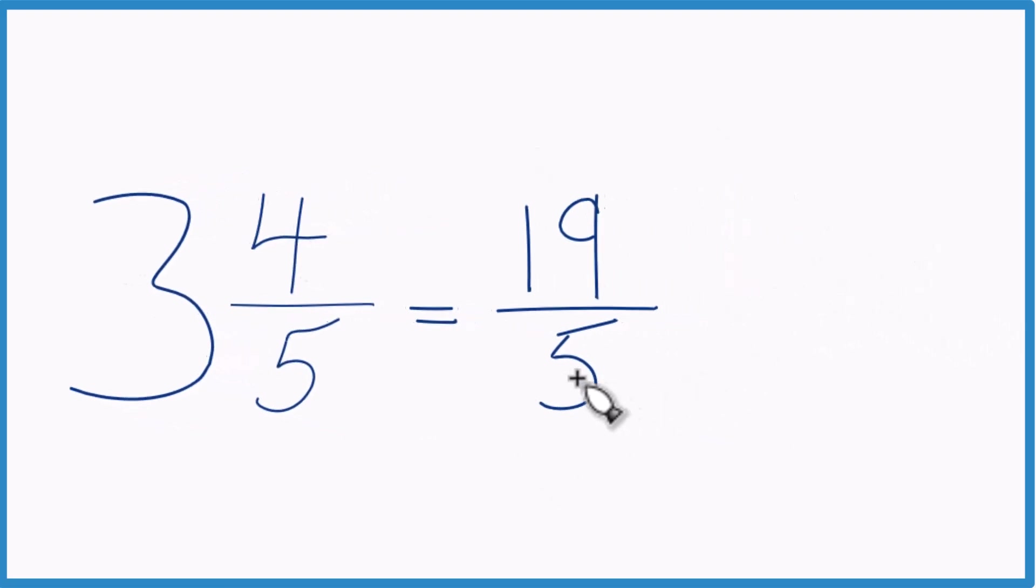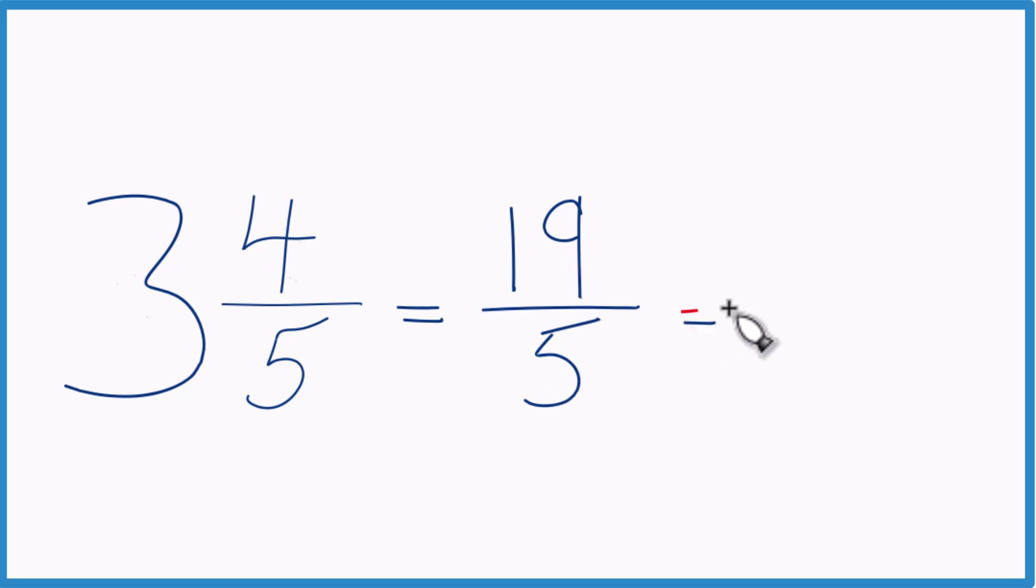We can even check our work here because 5 goes into 19 three times with 4 left over. Bring the 5 across, 3 and 4 fifths, that's what we started with.